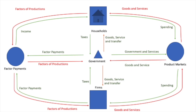Another leakage would be imports. When money goes out of the country to another country for an import — for example, if we are going to purchase avocados from Mexico, our US dollars go into Mexico, leaving the circular flow that we have for our country.